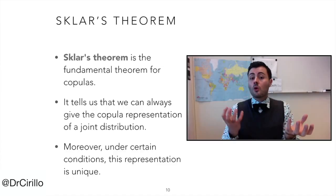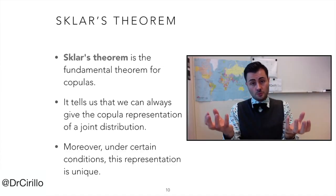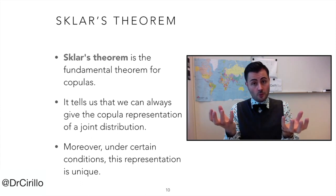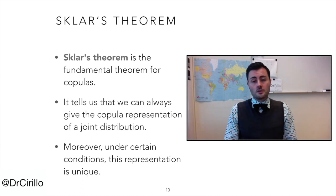Sklar's theorem is the most important theorem for copulas because it's the theorem that tells us that we can always give a copula representation of whatever joint distribution. So it's a very important result. And Sklar's theorem tells us what are the conditions we need to fulfill in order to have a unique representation of our joint distribution.